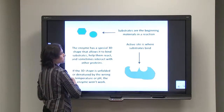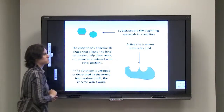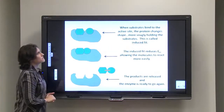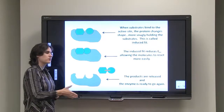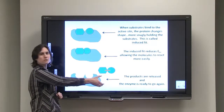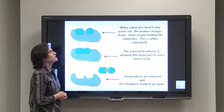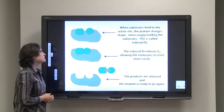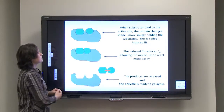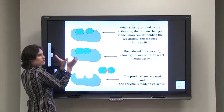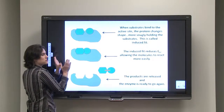Where the substrates bind directly is called the active site — those two spots on the enzyme. When the substrates bind to the active site, the protein changes its shape just a little bit, like when you reach out to shake someone's hand and they conform to yours. This more snugly holds the substrates together, and that's called induced fit. Induced fit reduces the energy of activation, bringing the molecules into very close proximity so the reaction occurs more easily.